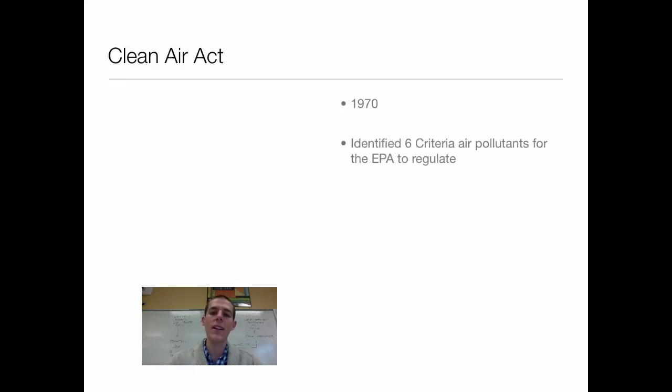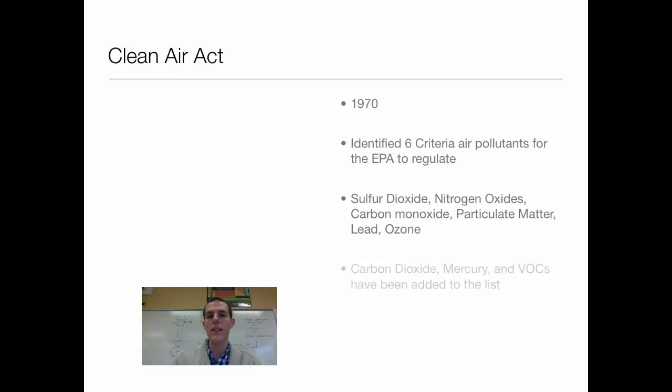First one is that it identified six criteria air pollutants for the EPA to regulate. So these are six air pollutants that were identified as pollutants that cause significant harm to human health or to the environment or to building materials and structures. They're known as the criteria air pollutants and they're ones that the EPA specifically monitors and regulates. Now those six criteria air pollutants are sulfur dioxide, nitrogen oxides, carbon monoxide, particulate matter, lead, and ozone. Now as we've moved on from the 1970s, there have been a couple others added. There's carbon dioxide, mercury, and VOCs. They've been added to the list. I don't know if they're specifically known as criteria air pollutants, but the EPA watches and regulates those air pollutants as well.